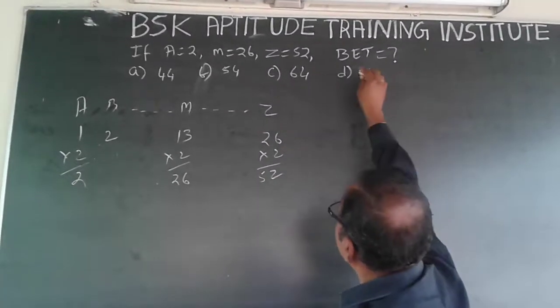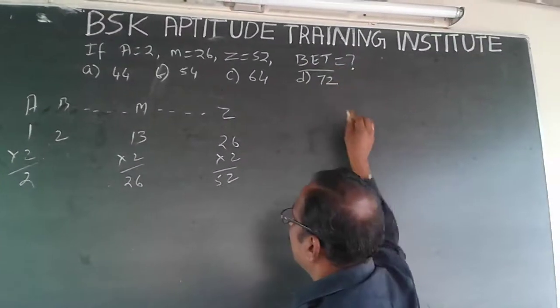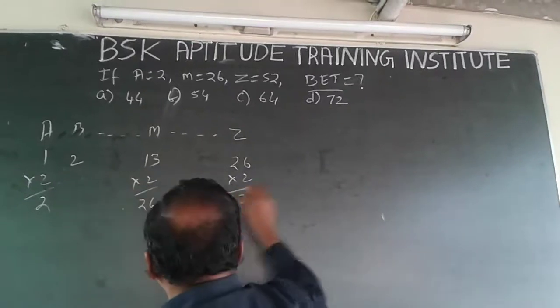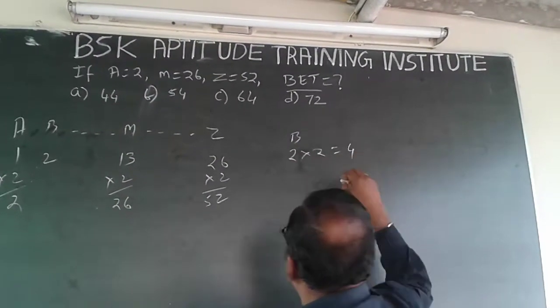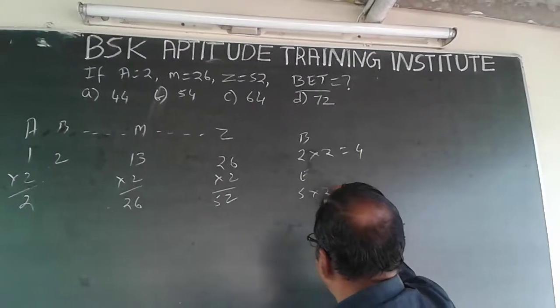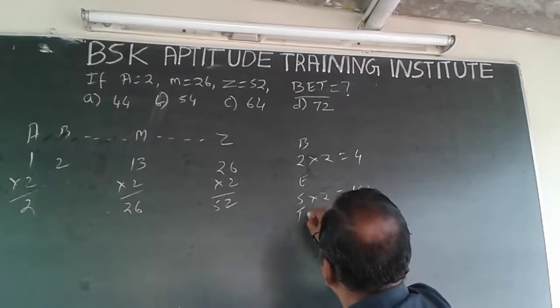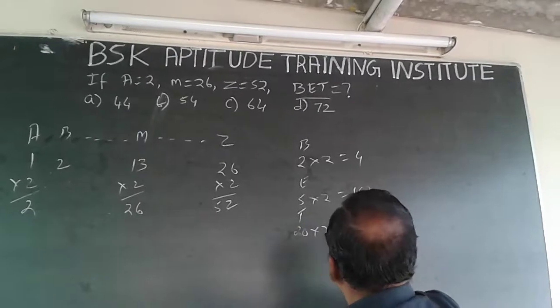So what you have to do is, they have asked for what is BET. So B corresponding alphabet number is 2, so B will be 2 into 2, 4. Similarly E will be 5 into 2, 10 and T will be 20 into 2, 40.